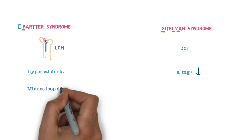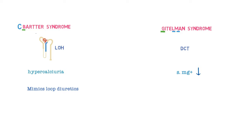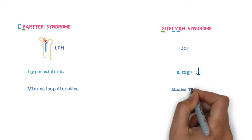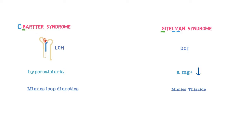Now, Bartter syndrome mimics loop diuretics while Gitelman mimics thiazides and Bartter also responds to prostaglandin.